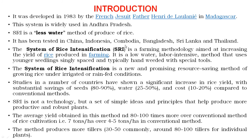This system is widely used in Andhra Pradesh. SRI is also called the less water method of producing rice, and it has been tested in China, Indonesia, Cambodia, Bangladesh, Sri Lanka, and Thailand. SRI is a farming methodology aimed at increasing the yield of rice, and it is a low water, labor-intensive method that uses younger seedlings singly spaced and typically hand-planted with special tools.